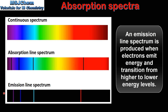Emission line spectra have coloured lines on a black background. They are produced when electrons transition from higher to lower energy levels, emitting energy that corresponds to the frequency or wavelength of visible light.